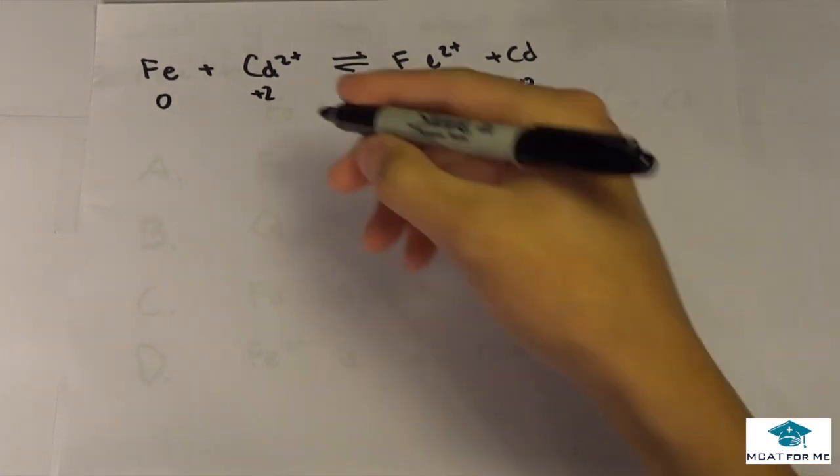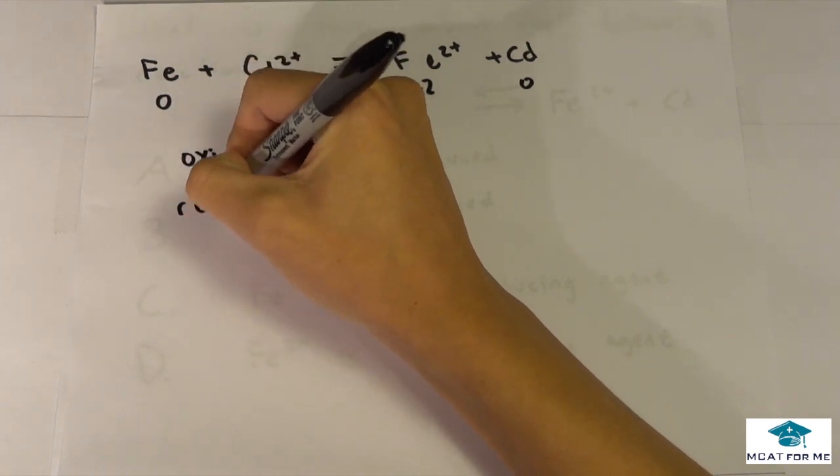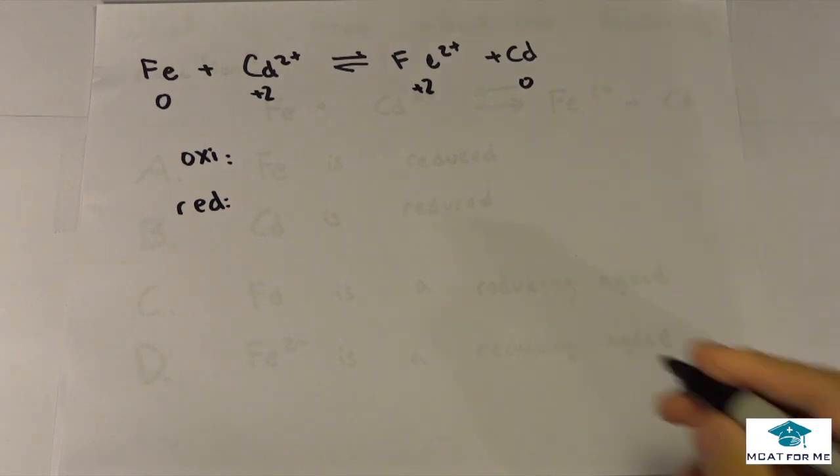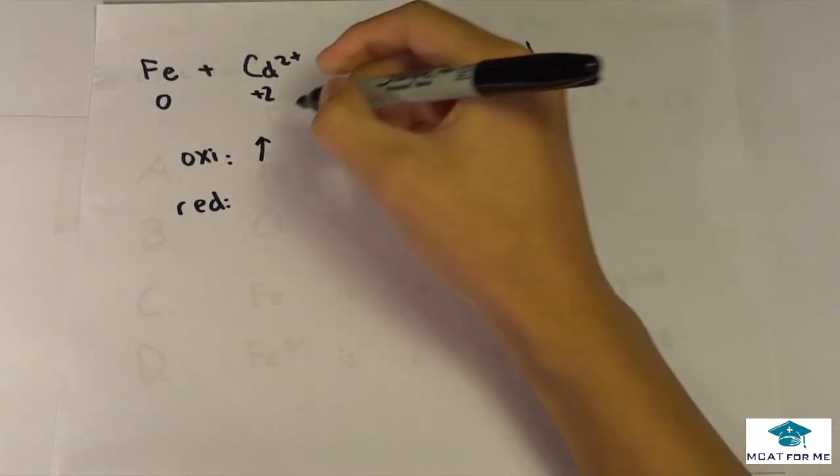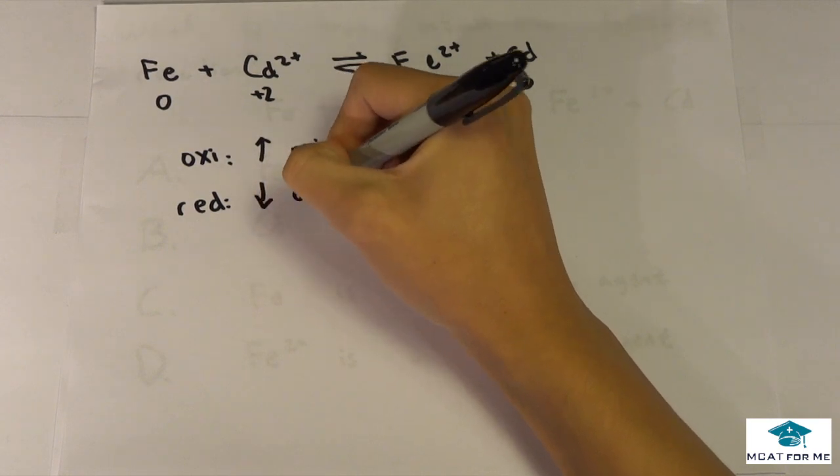And so now we need to find oxidation versus reduction. So oxidation, the first thing we should know is it's an increase in oxidation number and reduction is a decrease in oxidation number.